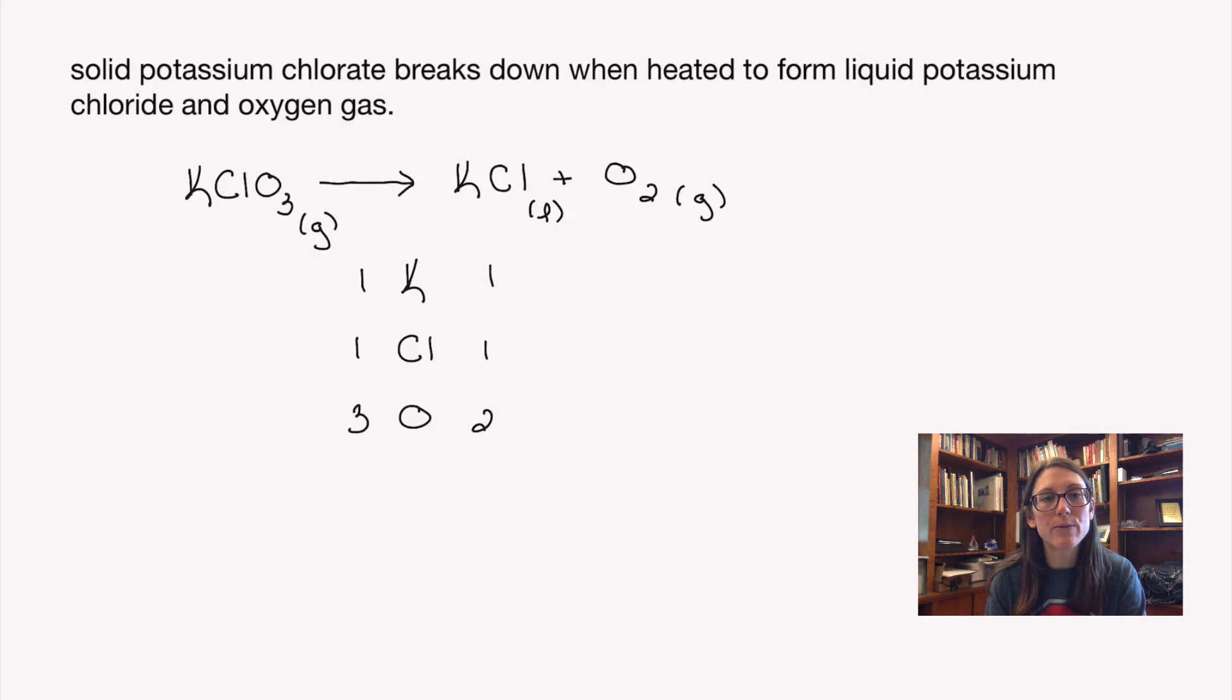I need to look for the least common multiple that both compounds can accommodate, which is going to be six. In order to get six oxygens on the left, I would need to multiply by a coefficient of two. Your coefficient multiplies any subscripts in your formula. This gives me two potassiums, two chlorines, and six oxygens.